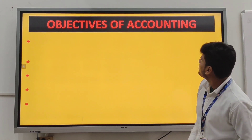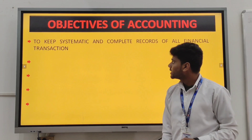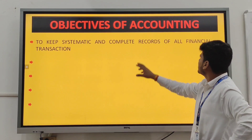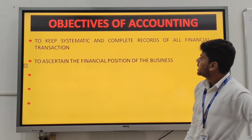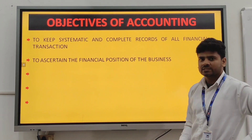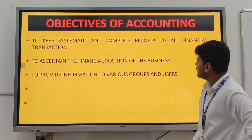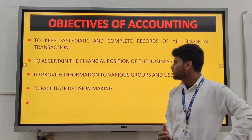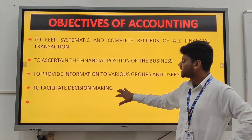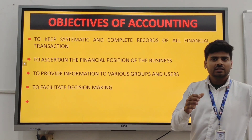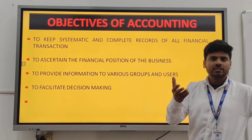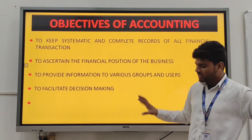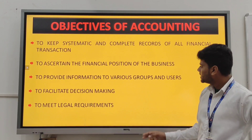Now the objectives of accounting. The first objective is to keep a systematic and complete record of all financial transactions. The second is to ascertain the financial position of the business. The third objective is to provide information to various groups of users. The fourth objective is to facilitate decision making — we create a balance sheet when financial transactions are done. And the last objective is to meet legal requirements.